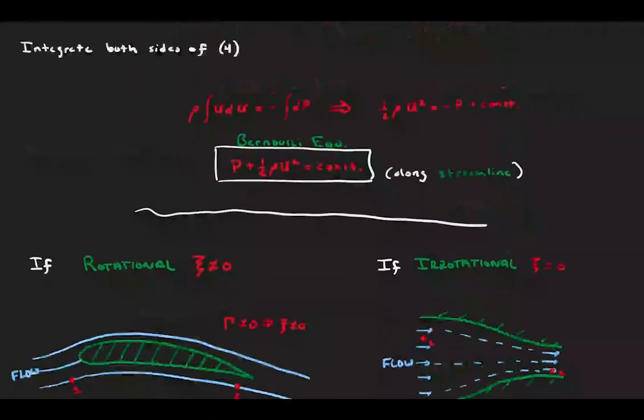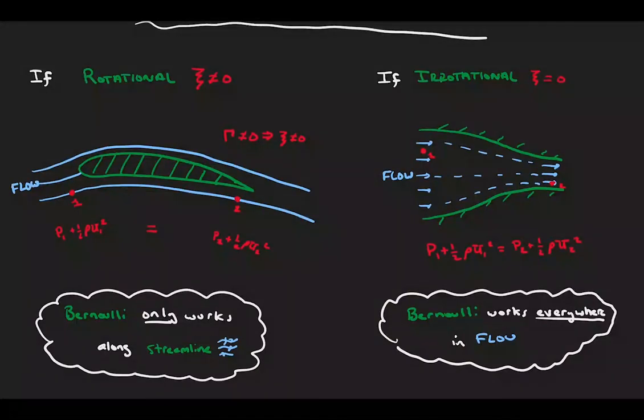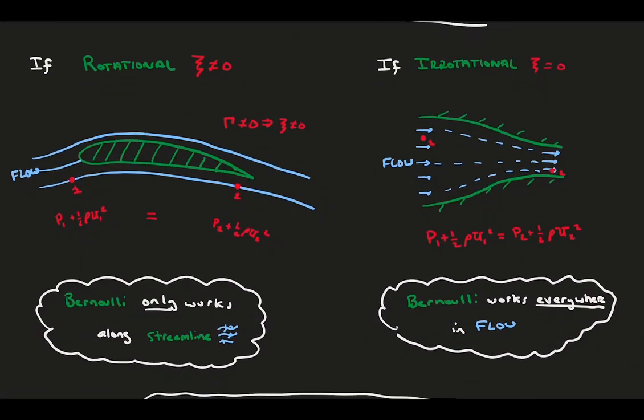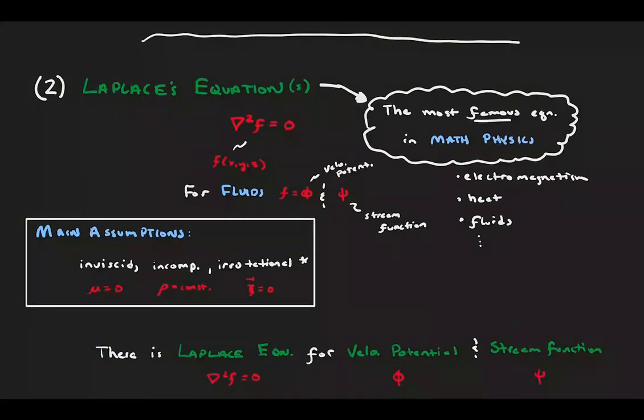We learned that, depending on if the flow is inviscid or irrotational, the application of Bernoulli changes. Then, we introduced the famous Laplace equation and showed that separately, the velocity potential and stream functions satisfy Laplace equation under these assumptions.